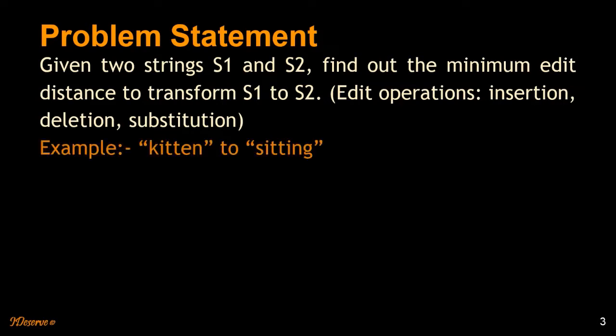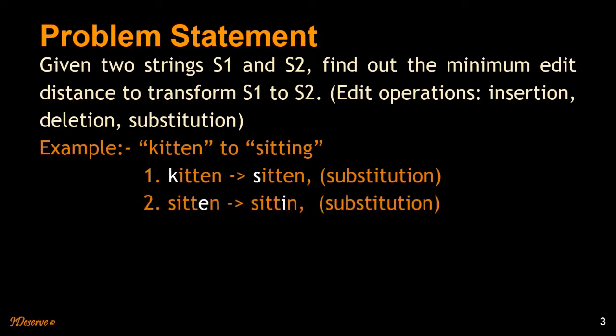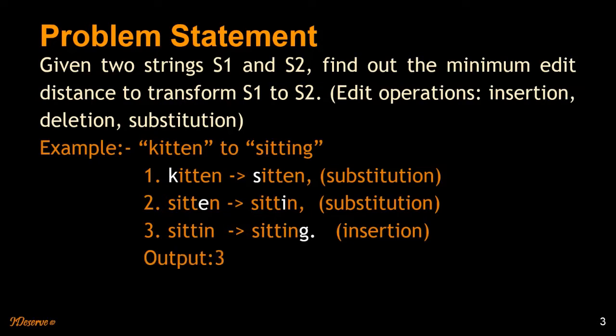For example, if you have the string 'kitten' and you want to convert it to 'sitting', how many operations would you require? First, you replace K with S, which is called substitution. Then replace E with I. Further, we insert G at the end. Finally, we get the string 'sitting' from 'kitten'. The number of operations used here is 3 — that is the minimum number of operations required to convert from S1 to S2.